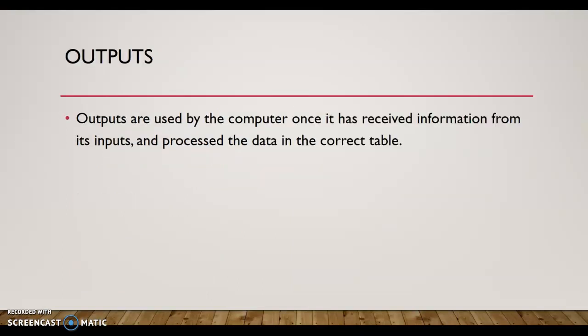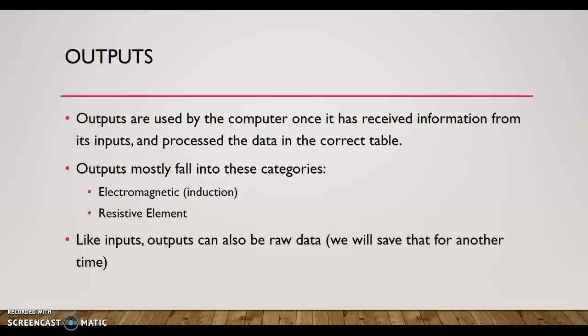Speaking of outputs, they are used by the computer once it's received its information from its inputs and processed the data in the correct table. Outputs mostly fall into these broad categories that I came up with just in my mind to simplify—in fact, oversimplify—what a computer does. The first category is electromagnetic, basically induction category, and the second is a resistive element. There are many outputs, but these are the two most common broad categories I can come up with. Like inputs, outputs can also be raw data, and we will save that for another time, perhaps another class.